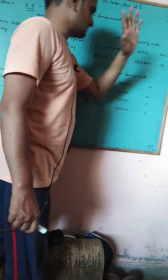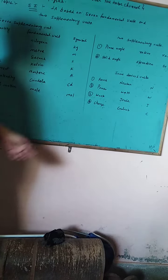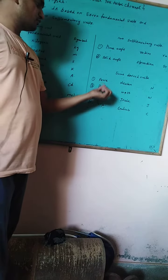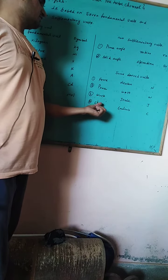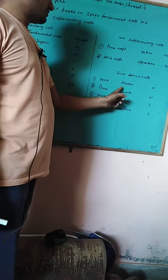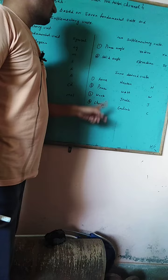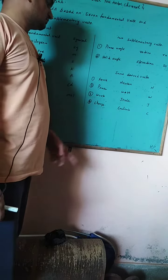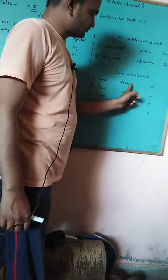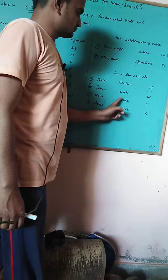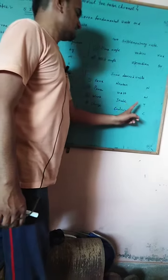Next, some derived units. The derived units - physical quantities like force, power, work, and electric charge. Force unit is Newton, power is watt, work is joule, charge is Coulomb. Symbols are: Newton is N, watt is W, joule is J, Coulomb is C.